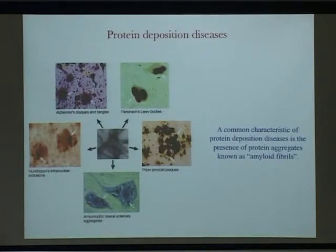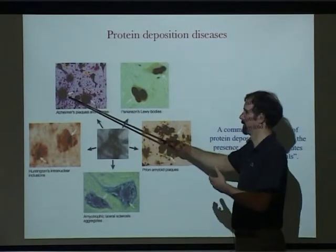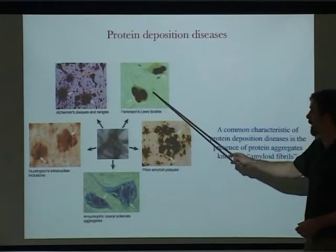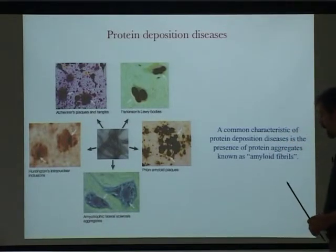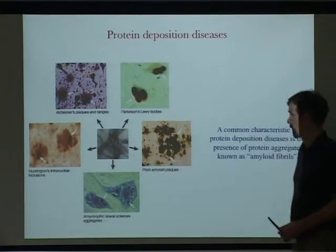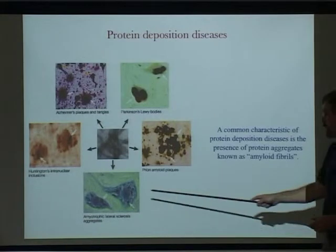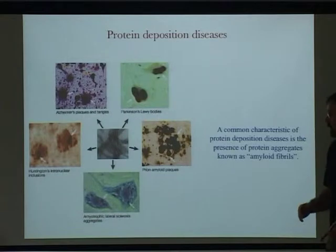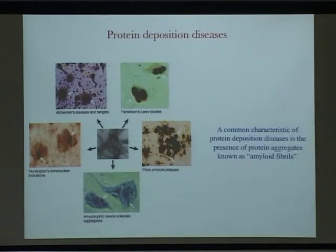Brain images of various diseases show black spots signaling the presence of aggregates that shouldn't be there — they are toxic. Parkinson, prion disease, ALS, and Huntington have similar structures at the imaging level. But at the nanometer or micrometer length scale, all of these aggregates share similar features: they look like long fibrils. So we want to understand the structure of these fibers.